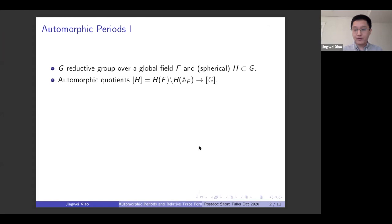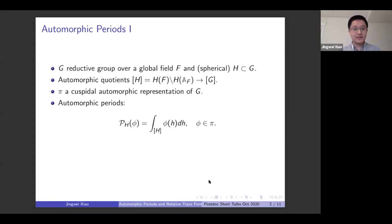And we consider the automorphic quotient [H] = H(F) \ H(A_F), [G]. It's the quotient of the adelic point by the rational point. And because you have a subgroup, you have an inclusion of the quotient. And given some cuspidal automorphic representation π on the group, what you can do is integrate those automorphic forms over the small group. And this is the automorphic period.